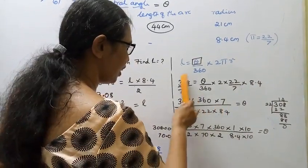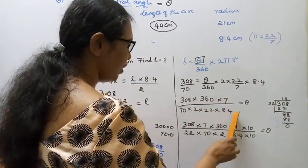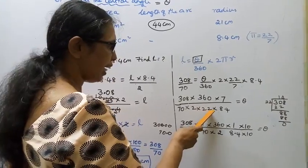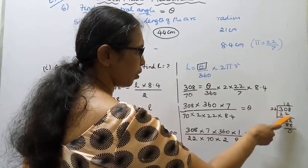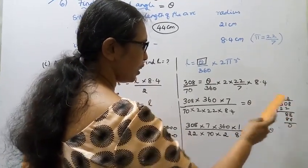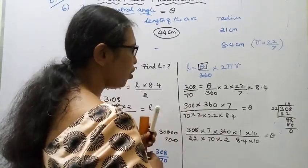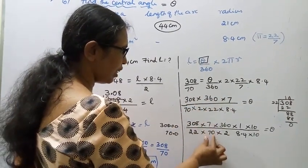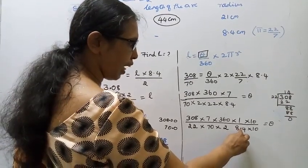The value 308 by 70 — cancel — now 8.4 multiplied. The link divides: 122 balance 8, length 8 to 4 times, then 4 into 22 is 88. So 308 divided by 22, multiply by 14.